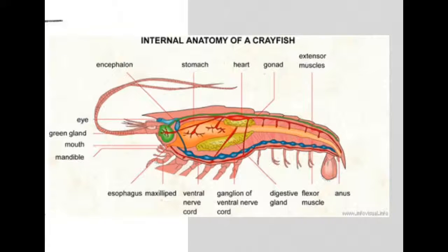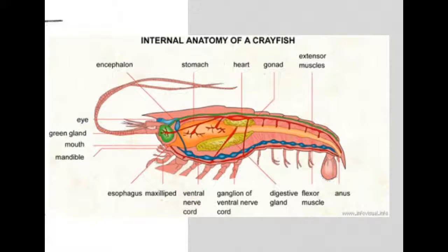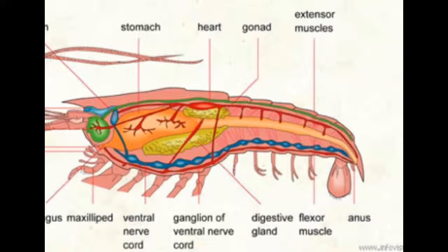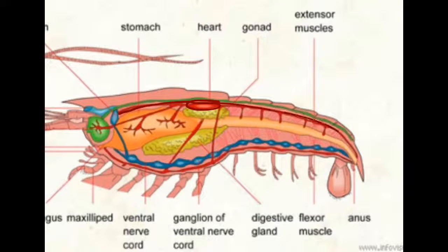Here we can see the internal anatomy of a crayfish, which is similar to a shrimp or to a lobster. Crayfish are ectotherms, meaning that they take their temperature from the environment around them, and they also have an open circulatory system. If we look closely at this crayfish, we can see its heart right here. We can also see that there are blood vessels all along the back of the crayfish, like this.